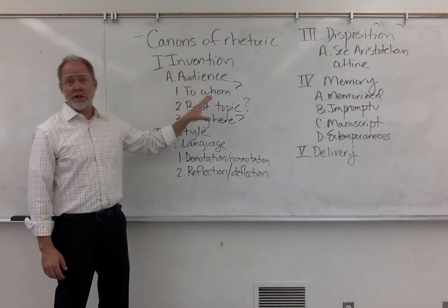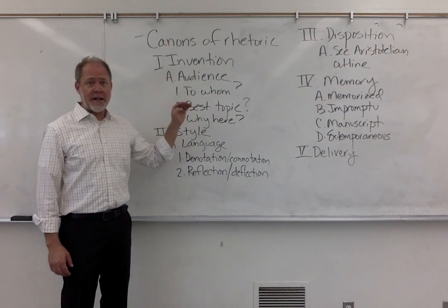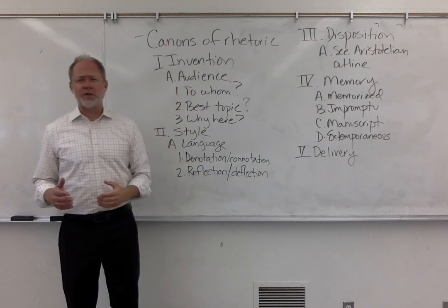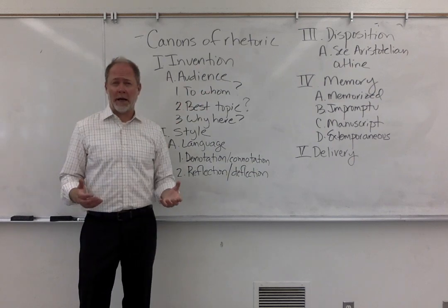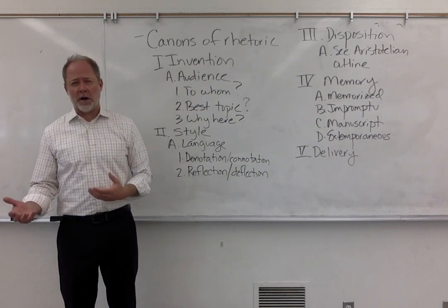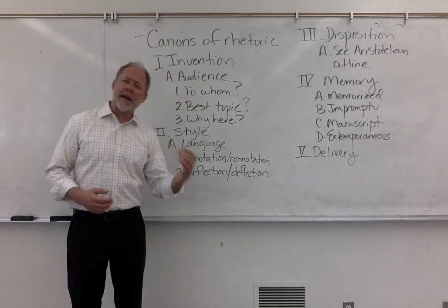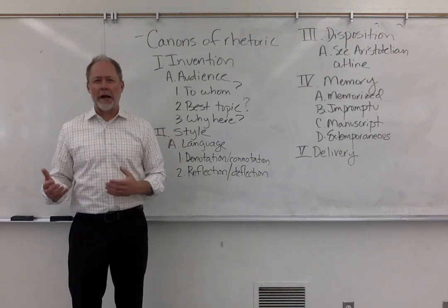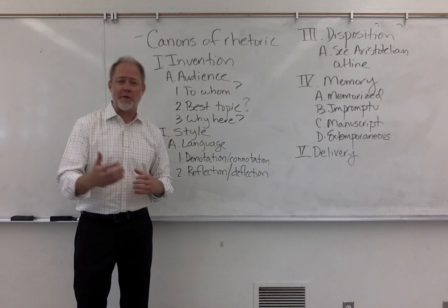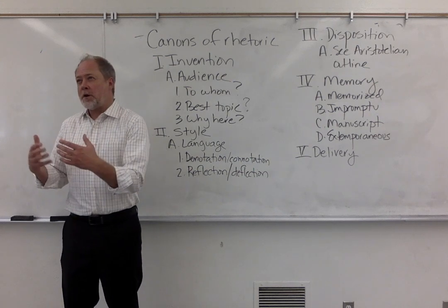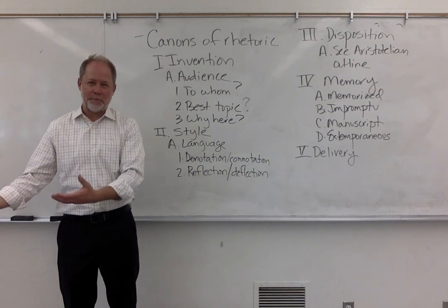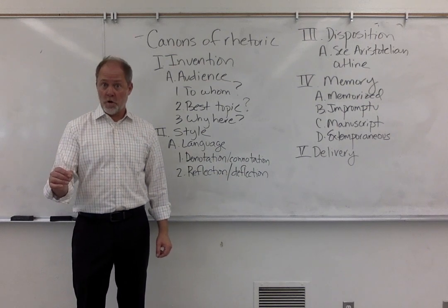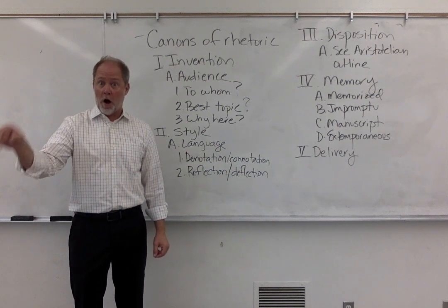The first canon is invention. This is extremely important because the invention canon is all about the audience. This is where you sit down and ask yourself questions like: who am I speaking to? What are the demographics of this audience — age, gender, things like that? Where are they from? What do they like? What do they not like? This is where you decide what is the best topic for them and what could potentially persuade them. Good public speakers are always audience-focused — it's always about the audience.